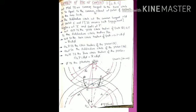The common tangent to the base circle is equal to the common normal at the point of contact. Where this tangent cuts the circle, you draw one normal line. O2M is the normal to this tangent and O1N is normal to this tangent — those are the normal lines.